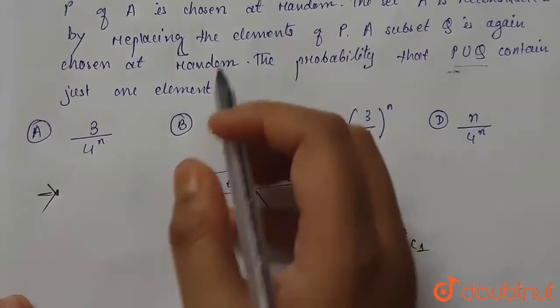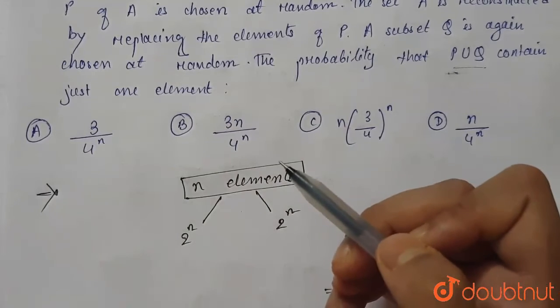Option number B which is 3n by 4 to the power n is the correct option. Thank you.